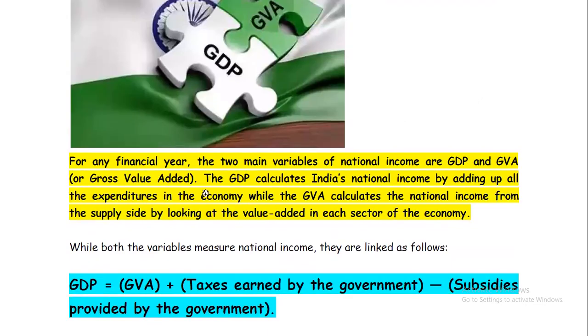For any financial year, the two main variables of national income are GDP and GVA — that is, Gross Domestic Product and Gross Value Added. Both of them are used for national income calculation.